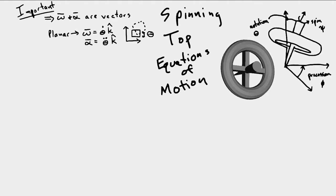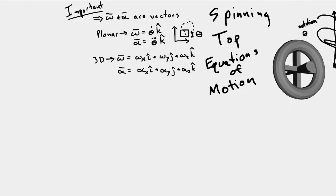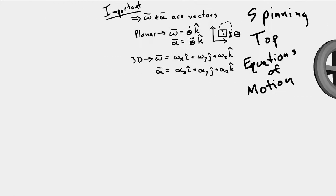When we look at a 3D system, now we have omega with three components, the same way that we have three components that make up a velocity vector. An angular velocity vector is a rotation, so it has three components, and then its derivative is going to have three components as well.